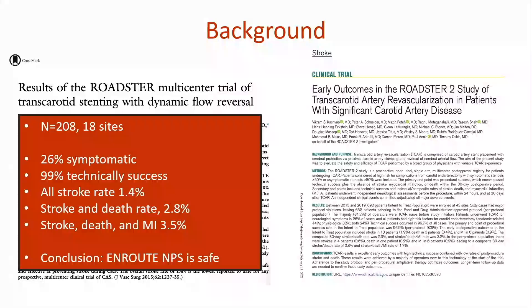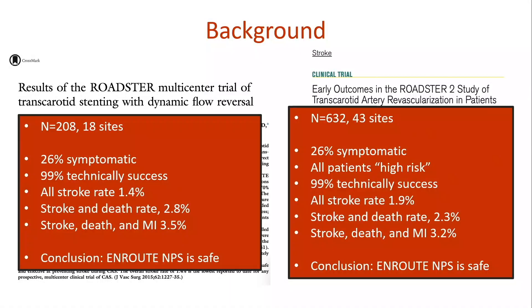Here's a summary of ROADSTER I and II. ROADSTER II is the better adjudicated study, with 630 patients — basically all high-risk. The big takeaway: stroke, death, and MI at 3.2%; all-stroke rate at 1.9%. The neuroprotective system was safe and non-inferior to the gold standard, which is carotid endarterectomy.